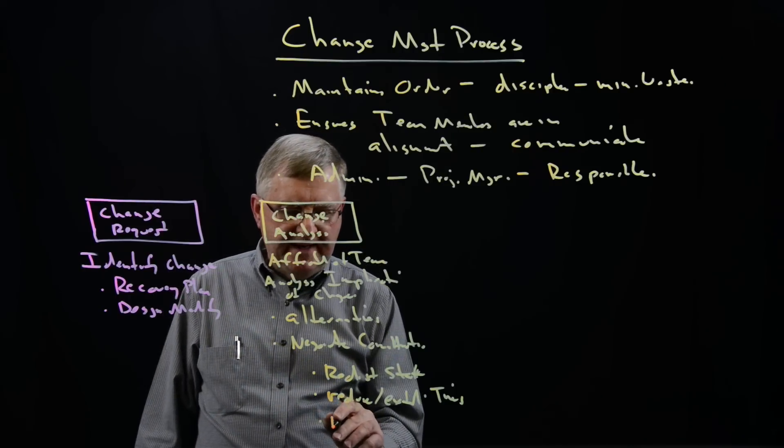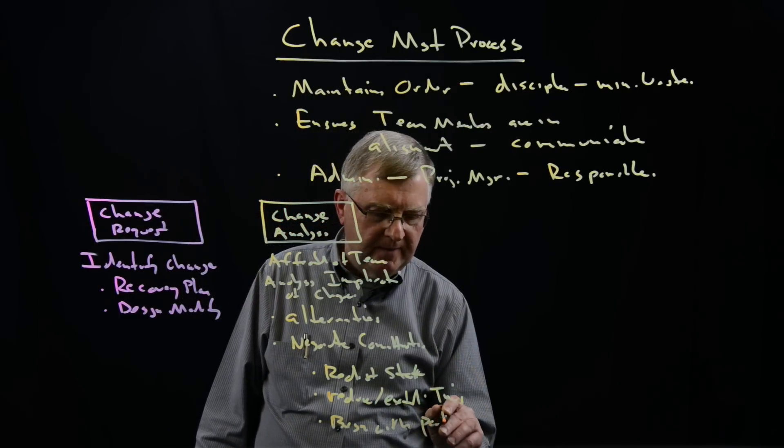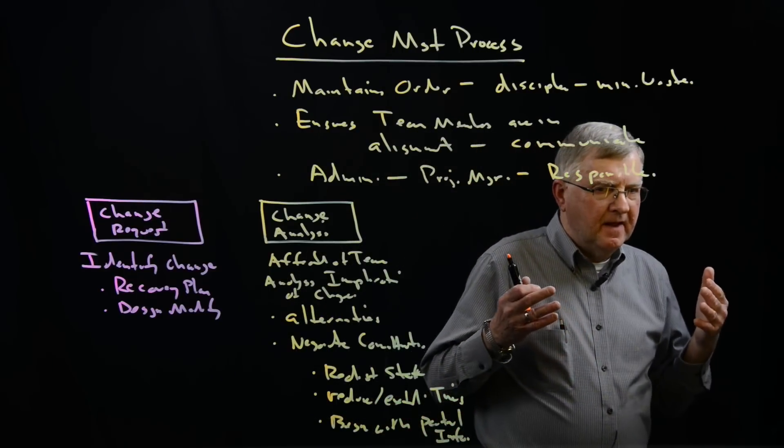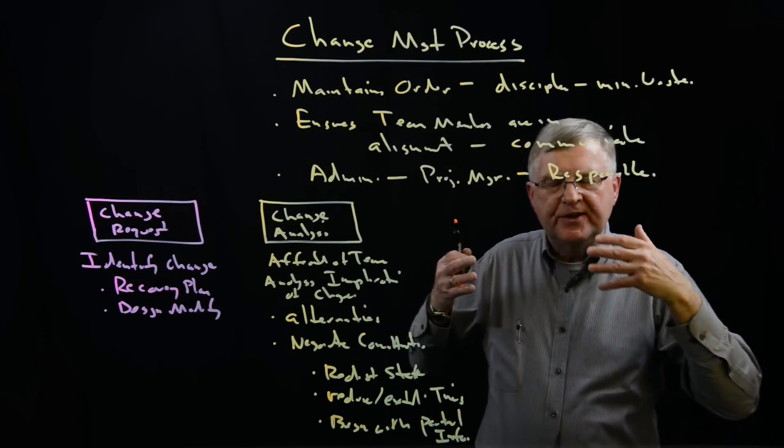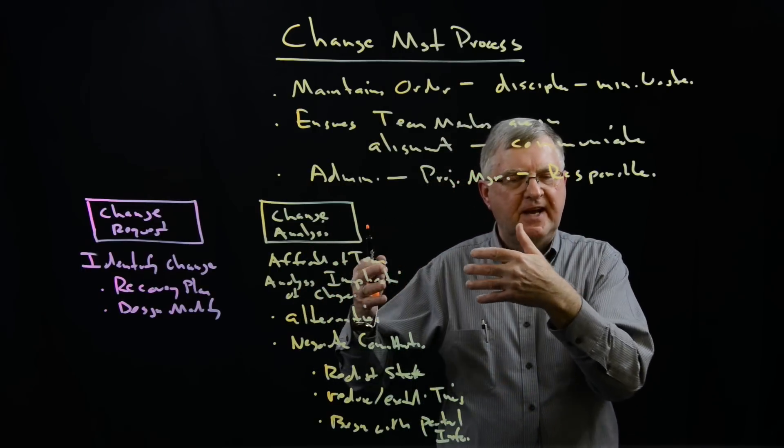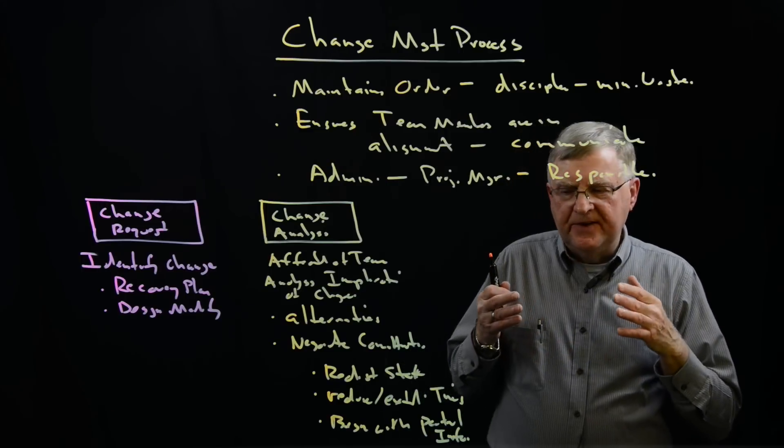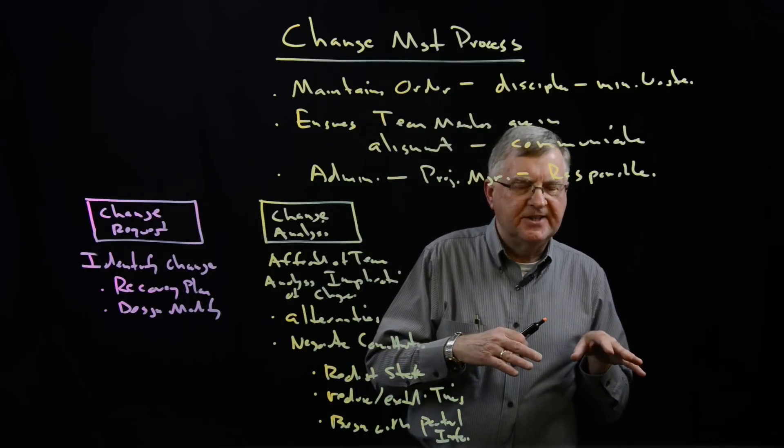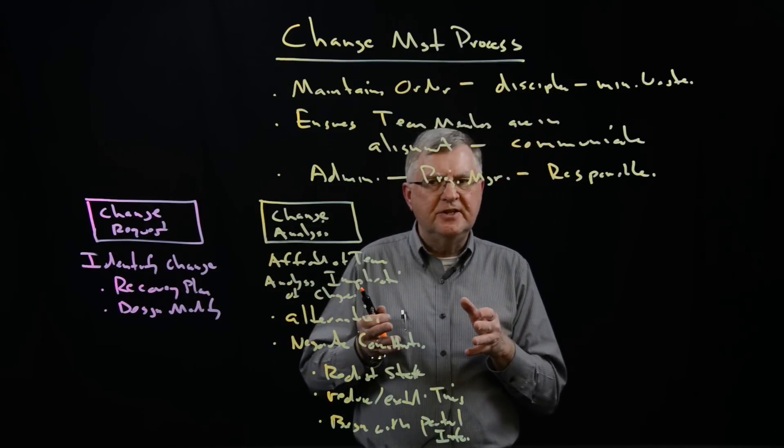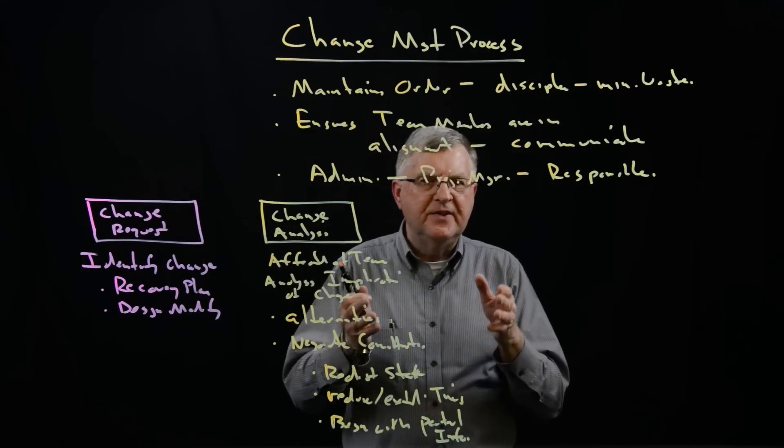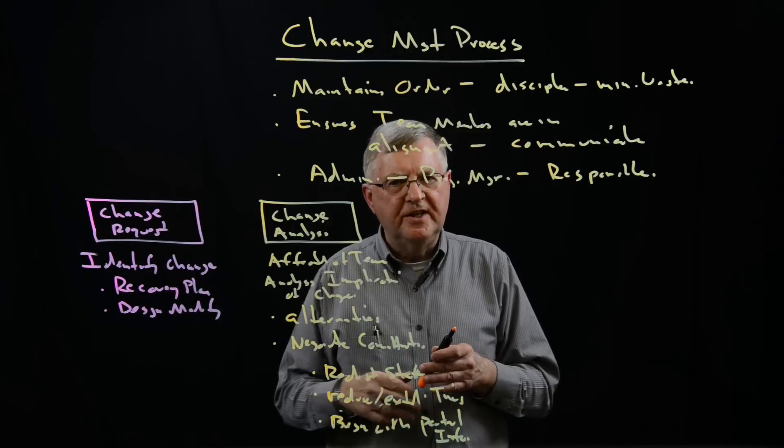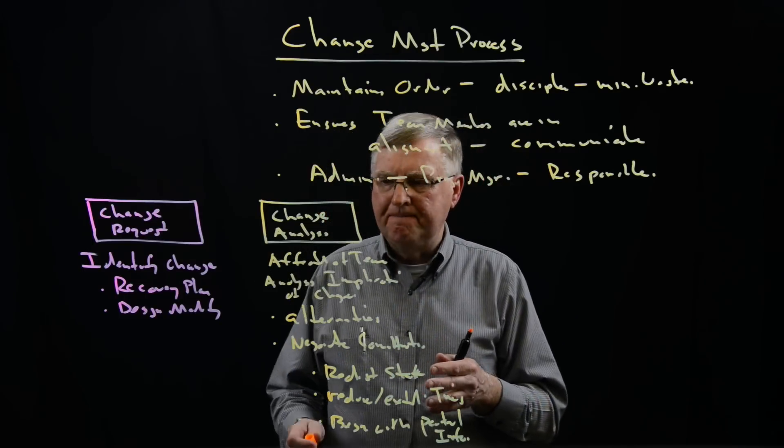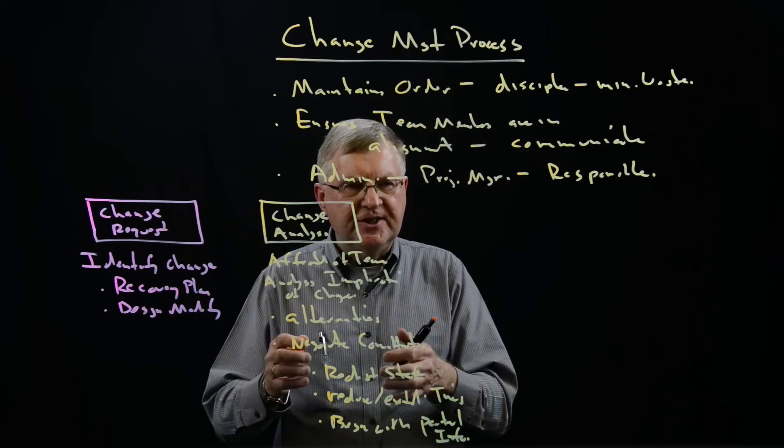Or we might begin a task with partial information. This is a case that in a work package, we identify a certain amount of information required from predecessor tasks. But under the guidance of the project manager, we might begin that task without all the information. It's called the conditional approval. So that we can begin the task while we're waiting for the additional information, the incomplete information that we have to be completed and brought to us.